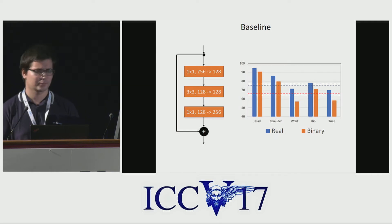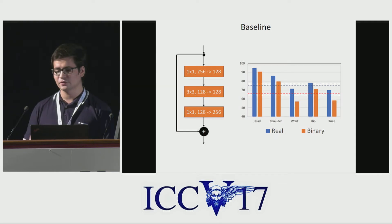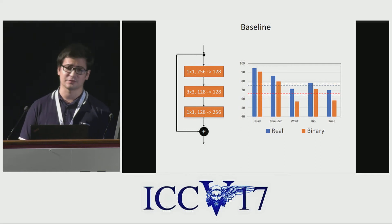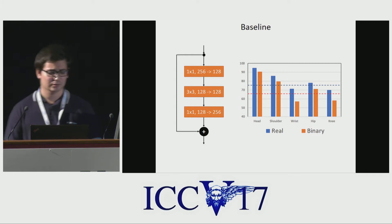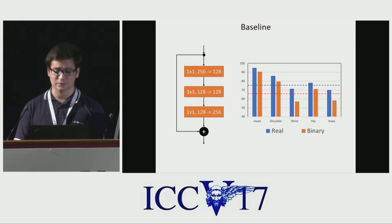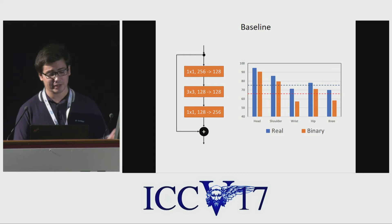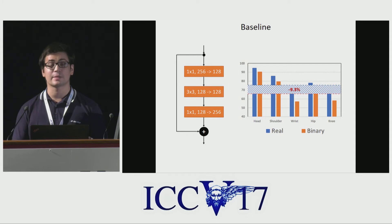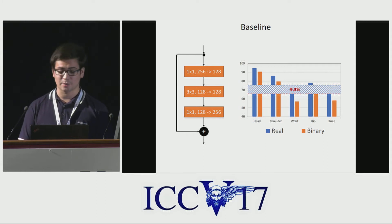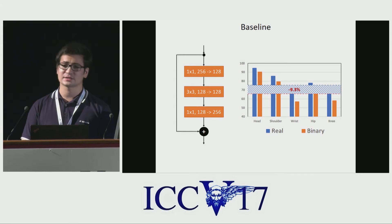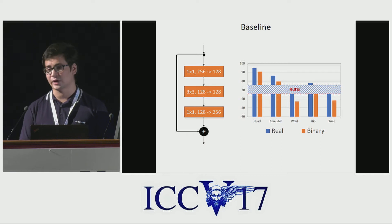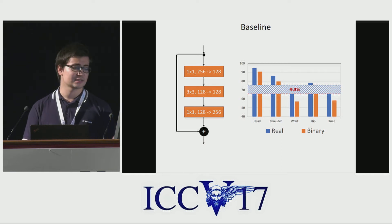As shown in previous work, the binarization process itself causes a noticeable drop in performance when tested on classification or object detection. It turns out that the same holds true for human pose estimation. By directly binarizing the original residual module, the performance drops by almost 10% on the MPI human pose validation set. Starting from this, we identified a series of issues and investigated ways to bridge the gap between the real and the binary counterpart in a systematic manner.